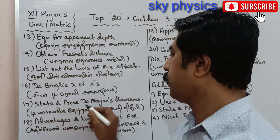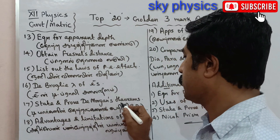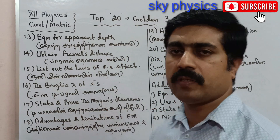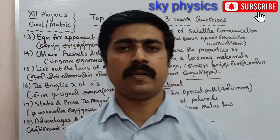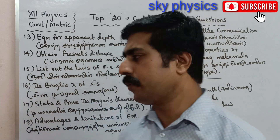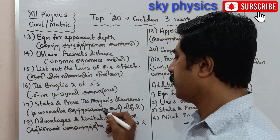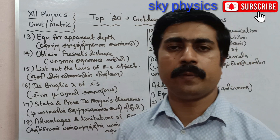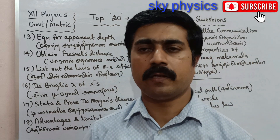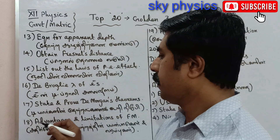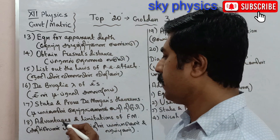17th question: State and prove De Morgan's theorems — Theorem 1 and Theorem 2. (Tamil: De Morgan's Theorems — Theram 1, Theram 2.)